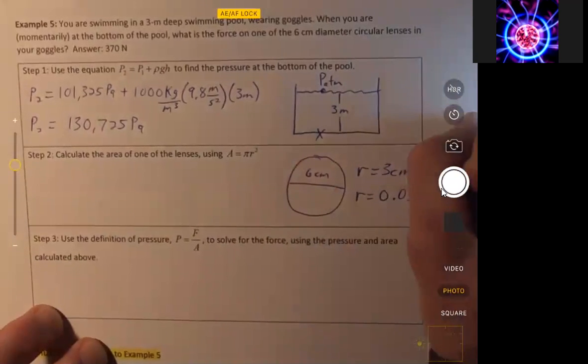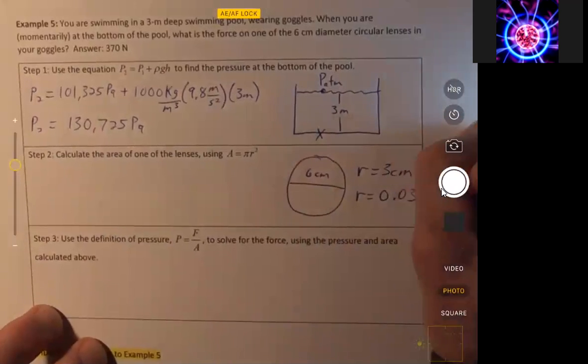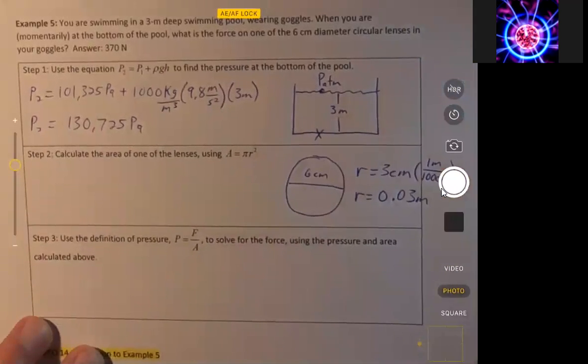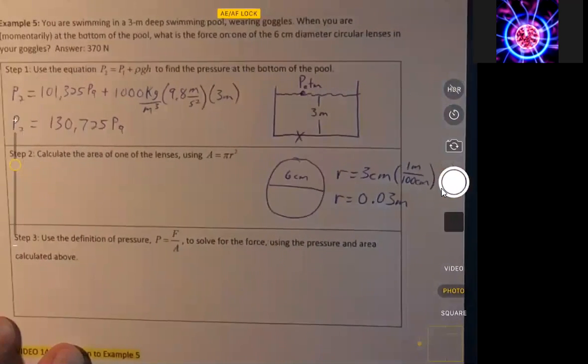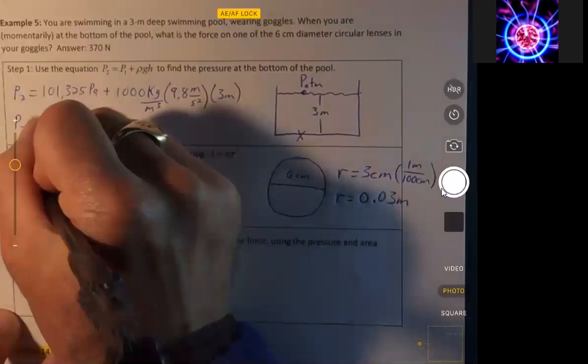because we can multiply by one meter over 100 centimeters to be able to get the radius in meters. So this is simple enough,